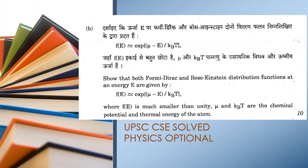Hello everyone. In today's video we will be taking one of the previous year questions of physics optional UPSC exam. Here is our question: we have to prove that Fermi-Dirac and the Bose-Einstein distributions converge when the f(E) function is much smaller than unity and tends to 0. Here, mu is the chemical potential and k_b T is the thermal energy. Let's start with our answer.